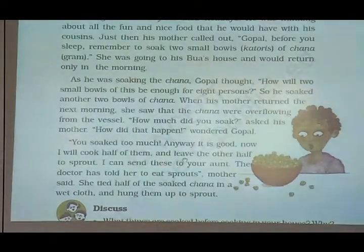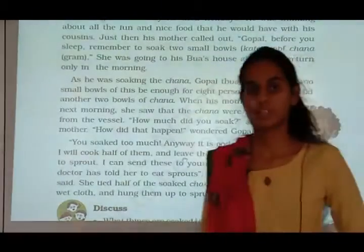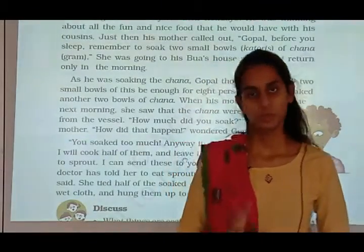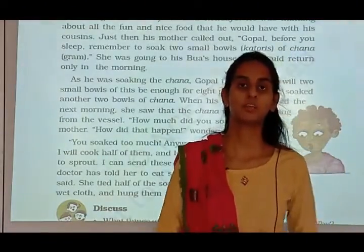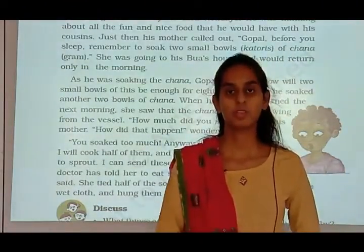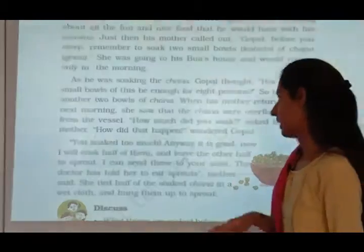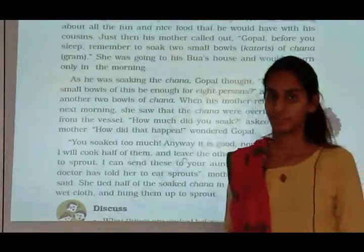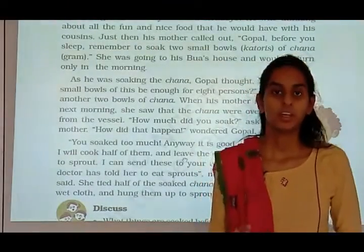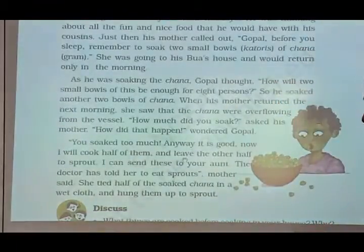When his mother returned the next morning, she saw that the chana were overflowing from the vessel. His mother had told him to soak two bowls, but Gopal thought it would not be enough, so he soaked another two bowls — four bowls total. The chana was getting out from the vessel. See the picture.